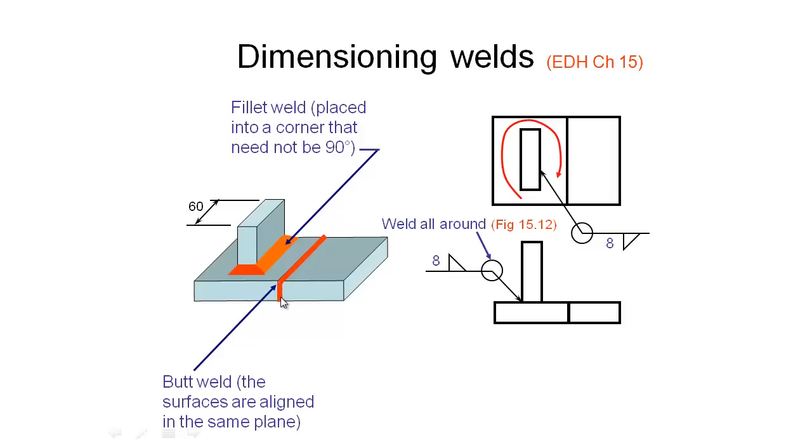We've got a different type of weld here where we've got these two plates joined together by butting them up against each other and the surfaces are aligned in the same plane. That's called a butt weld and we have a different symbol for that. You can find all the different types of welds and the symbols for them in your engineering drawing handbook. This type of weld would be indicated something like this, where we have the two vertical lines going down to indicate the two edges of the part coming together. Then we point to the intersection where we want this butt weld. We could also indicate it on this drawing like so.